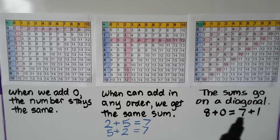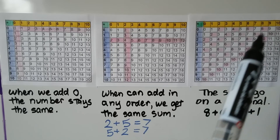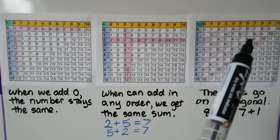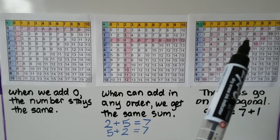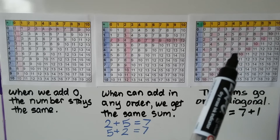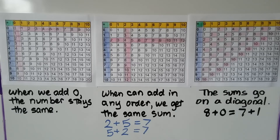So we can even do that as a pattern. 8 plus 0 is equal to 7 plus 1 — they both have 8 as a sum. We can even do 6 plus 2 and 5 plus 3. By coming down like this, they all have the sum of 8.